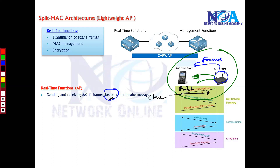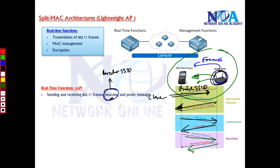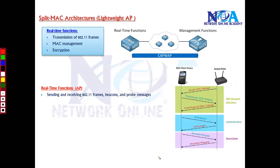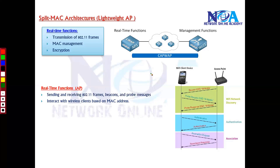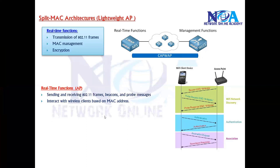The client sends a probe request saying it wants to join a specific SSID, because beacons broadcast the SSID. Using probe messages, the client contacts the access point to connect. The access point responds, then the authentication process happens, followed by association request and association response, and finally the connection is established. The access point is also responsible for identifying devices based on MAC address — MAC-based forwarding, just like in a switch.